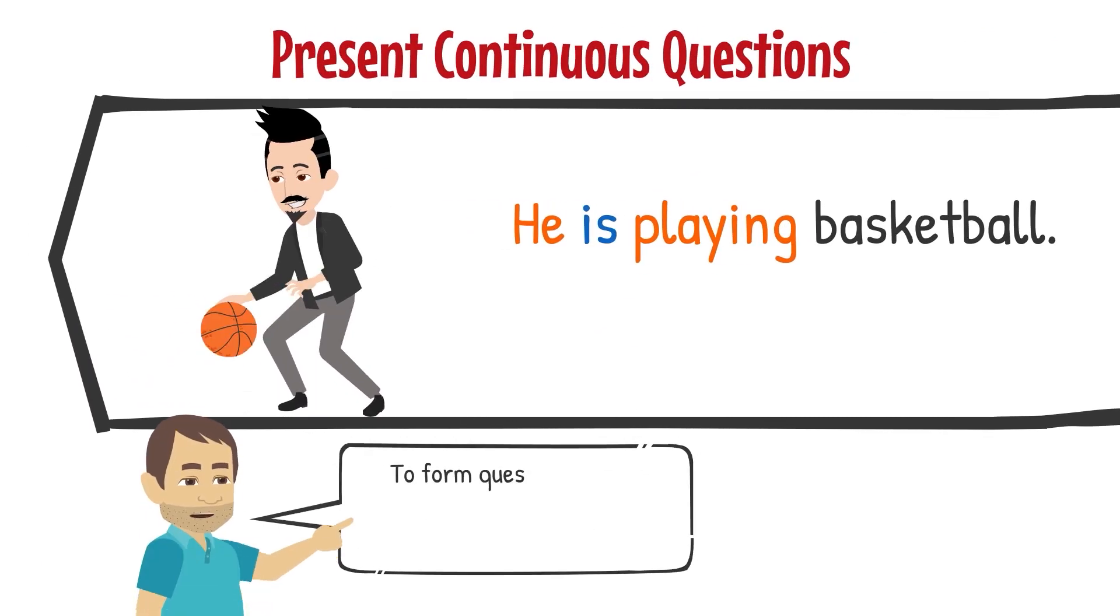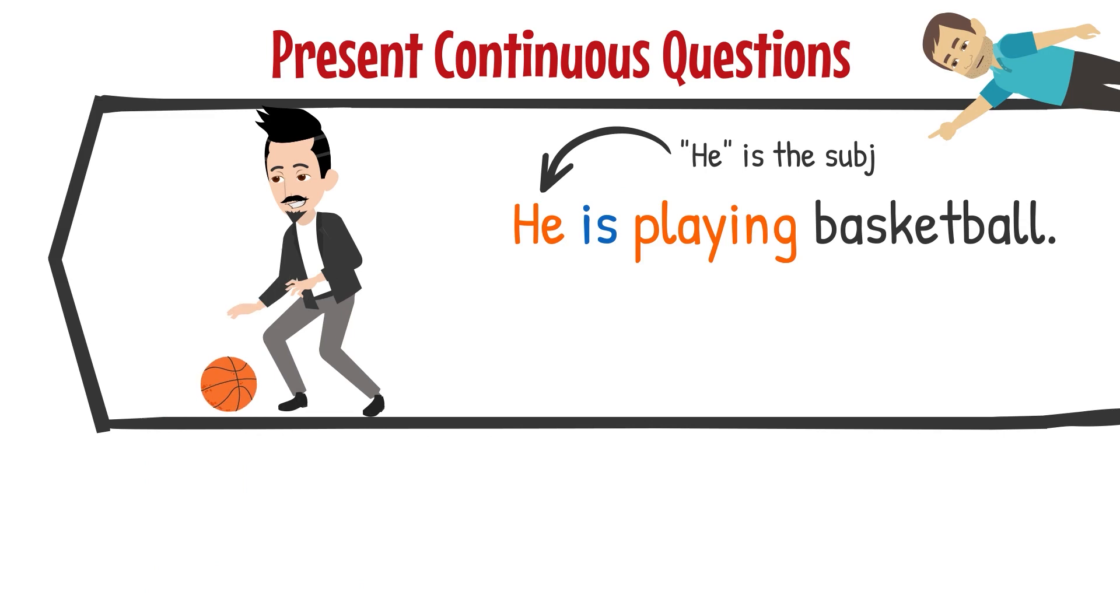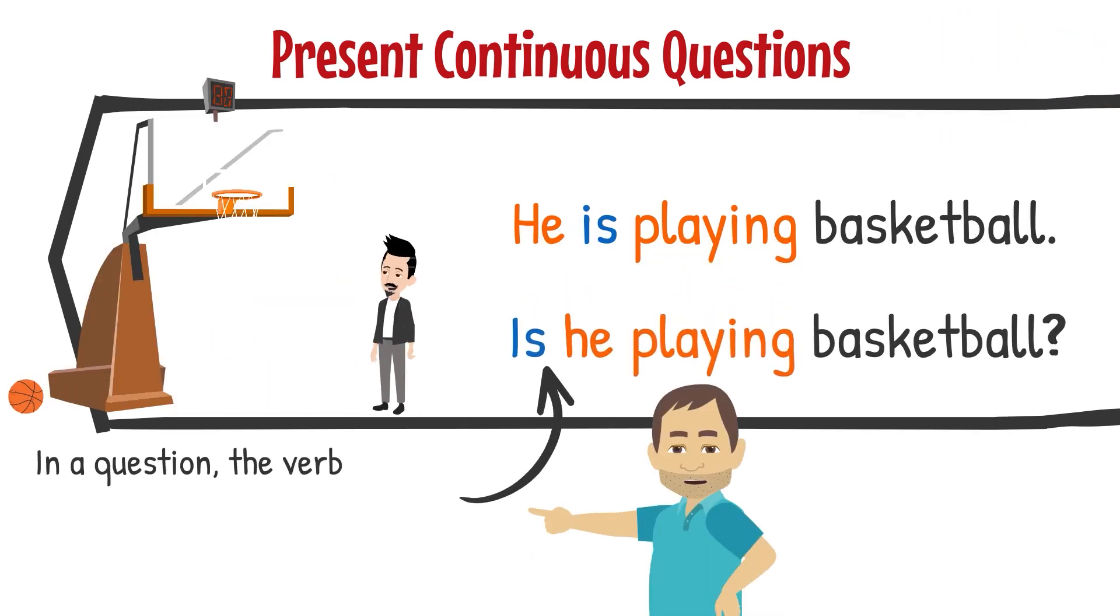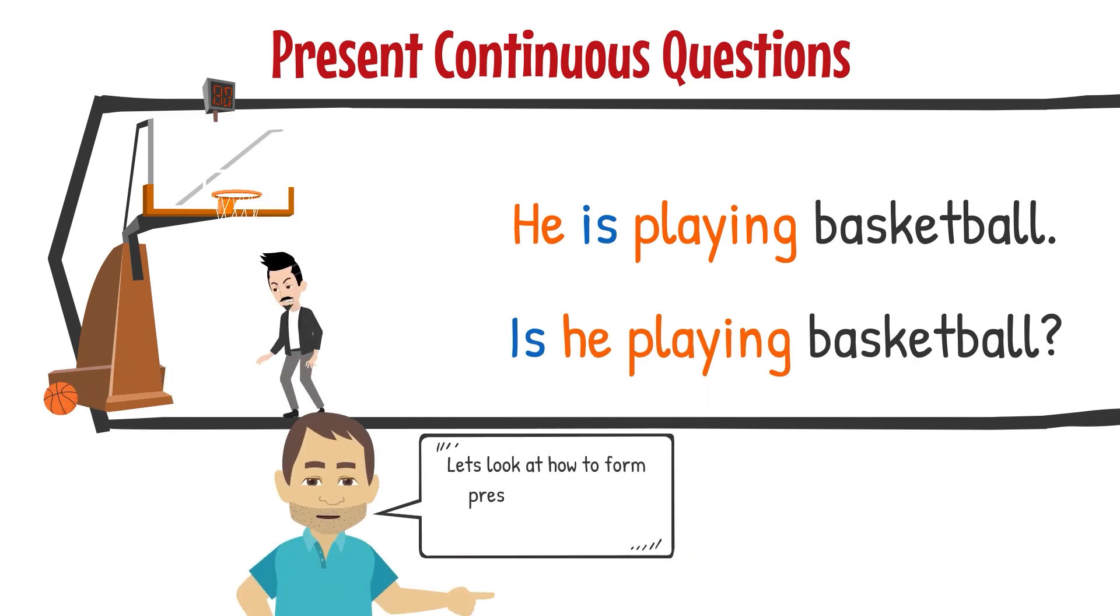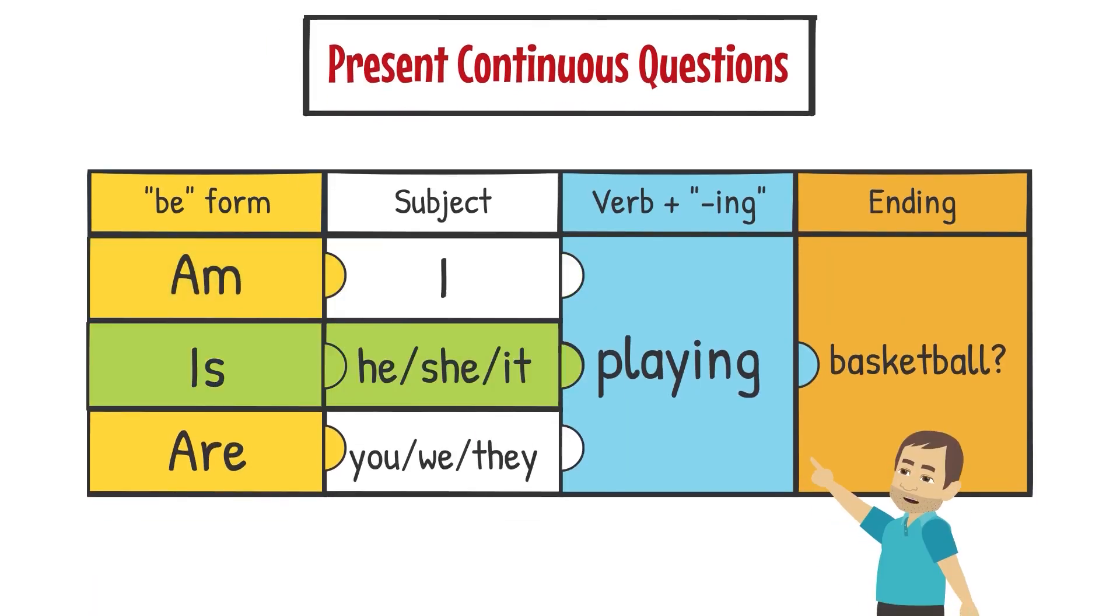To form questions in the present continuous, swap the subject and the verb form be. He is the subject. In a question, the verb moves to the start of the sentence. The action is happening right now. Let's look at how to form present continuous questions. Am I? Is he? Is she? Is it? Are you? Are we? Are they?